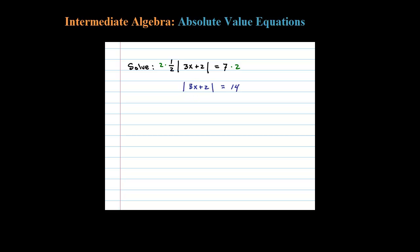Once you have the absolute value isolated, you look at the argument. 3x plus 2 here could either be negative 14, in which case the absolute value makes it 14, or the argument 3x plus 2 could equal 14. The absolute value of 14 is 14 as well. So now we have two linear equations to solve.